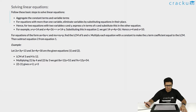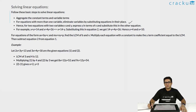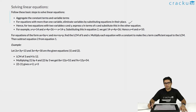For equations with more than one variable, eliminate variables by substituting equations in their place. What this means is: if there are two linear equations each with two variables, you can substitute one of them using the other equation, and we will see this in the example below.